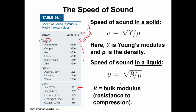For a liquid, we don't use Young's modulus — instead we use the bulk modulus, which is the resistance to compression, along with the density of the liquid. That's why we see different speeds in materials like alcohol, mercury, and water. The bulk modulus is a characteristic of the material.